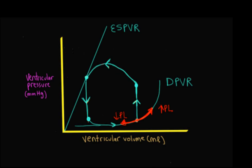For afterload, we think about wall stress in the ventricle during ejection. A good proxy is ventricular pressure during ejection, and the end systolic pressure gives us a good idea about that — if it goes up, afterload has gone up; if it goes down, afterload has gone down. For inotropic state: if the end systolic pressure stays the same but the end systolic volume goes down, that represents a decrease in inotropic state. If the end systolic pressure stays the same and that point moves to the left, that's an increase in inotropic state, because there would be a shift in the ESPVR.